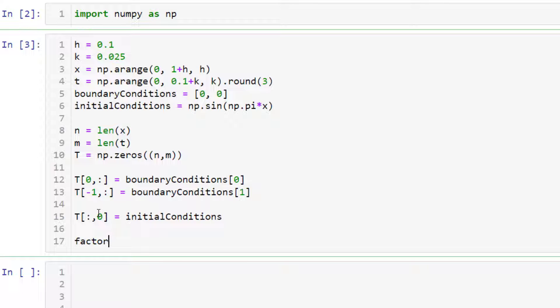Then we need to calculate the lambda. In this case, lambda is a built-in function. So we're not going to call it lambda. We'll call it the factor. This is calculated as k divided by h squared.